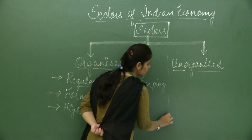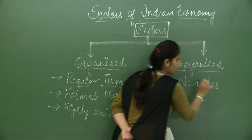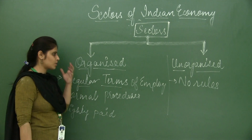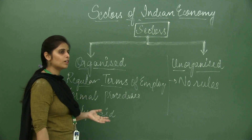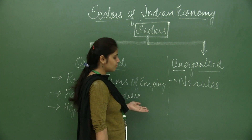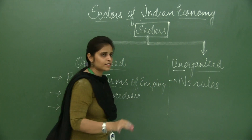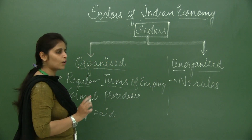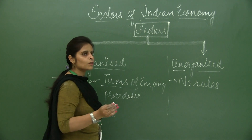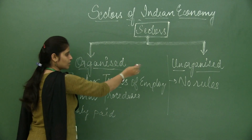The unorganized sector has no rules regarding this. Unorganized sectors do not have any regular terms and conditions of employment. It does not include fixed timings, safety, or paying norms — there are no rules. The timings are not fixed, the salary is not fixed according to a grade, and the workers do not get gazetted holidays. They do not enjoy safety and security in the organization.